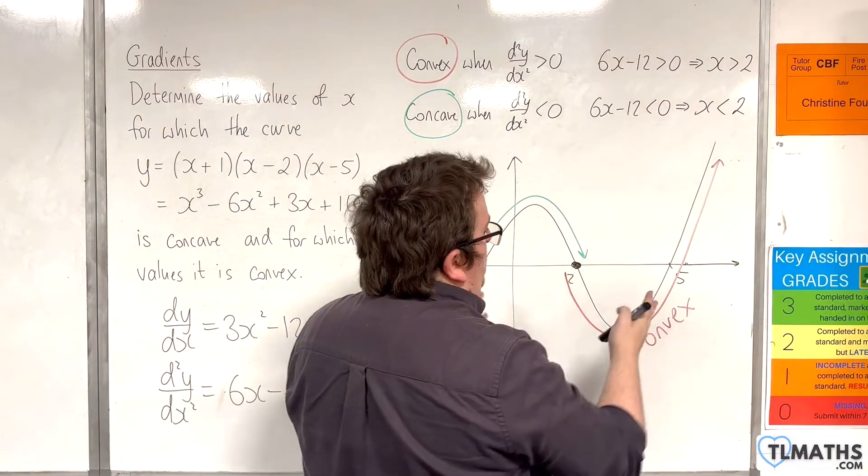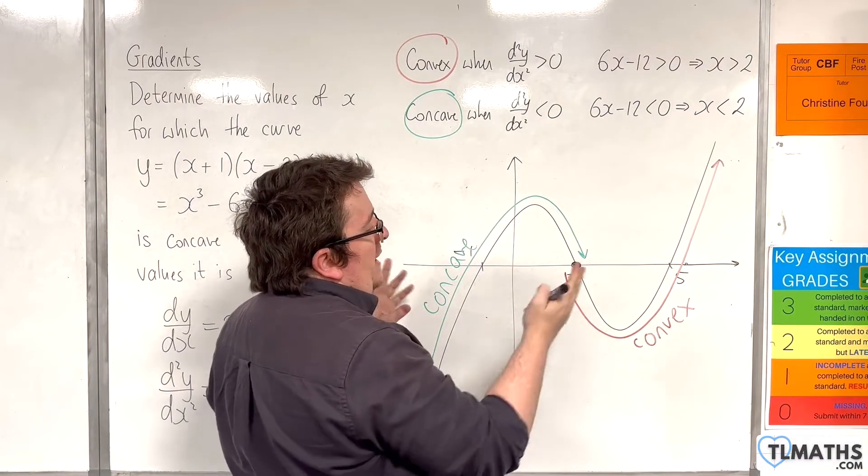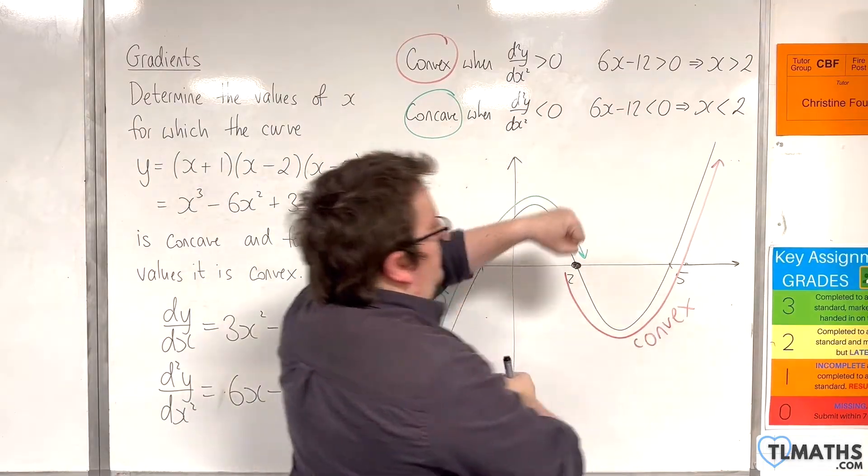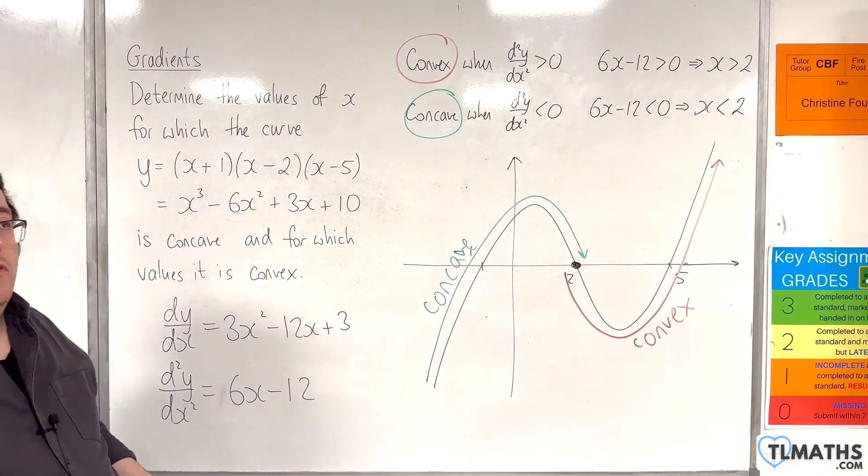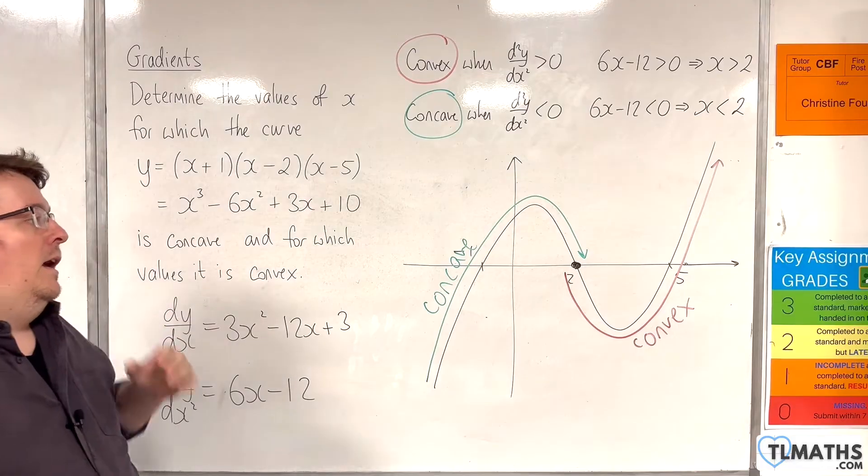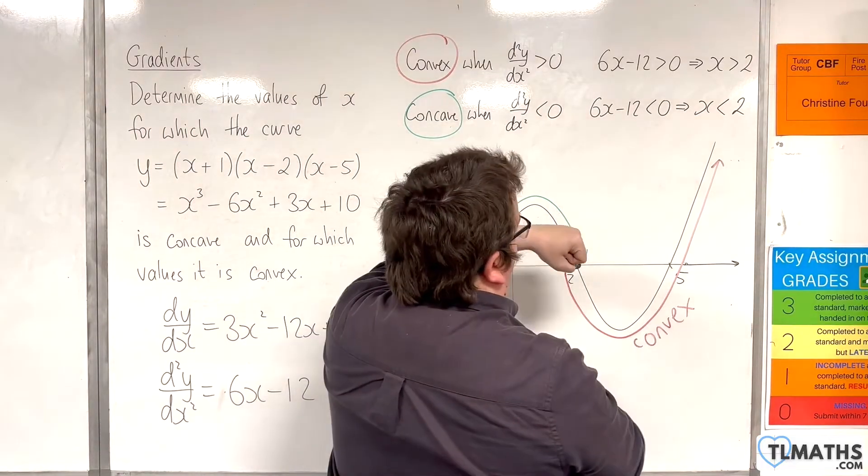So, cubic curves have the property that, if you rotate them about that point of inflection by 180 degrees, then they will map straight on to themselves.